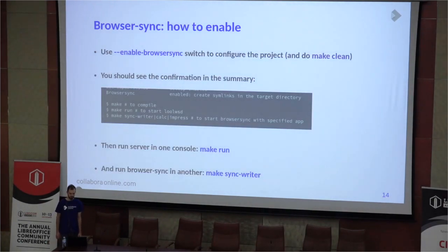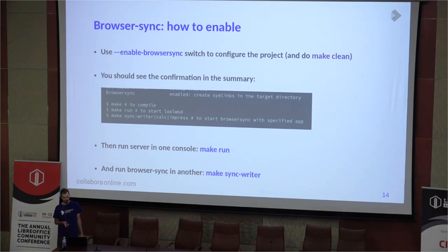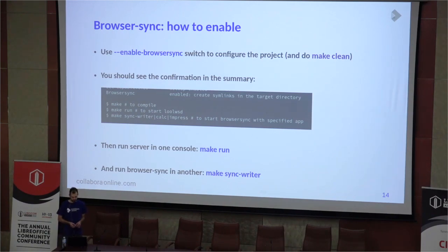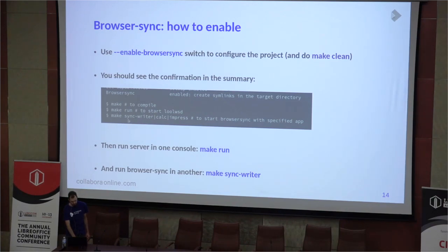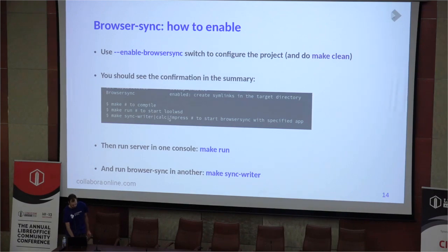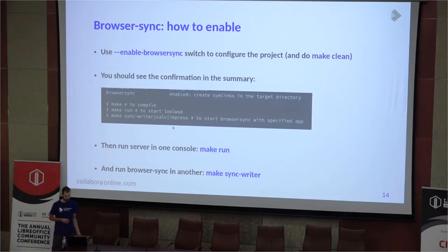To enable it, we need to enable the BrowserSync switch during the configuration of the project. Importantly, if we already built the application previously, we need to run make clean to ensure no file is left in the destination directory. After configuration we see a summary where we can check if BrowserSync is really enabled, and we can see an additional make target — sync writer, calc, or impress — which starts the proxy with the application we specified. Of course we need two consoles: one with the server running make run, and another with the proxy running make sync writer, for example.